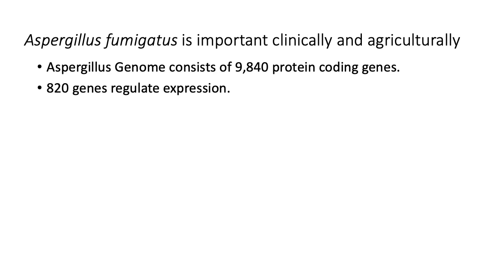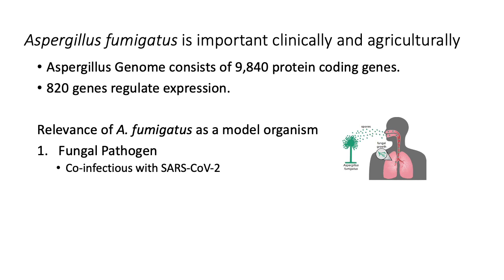Our work focuses on leveraging GRN inference to study the fungus Aspergillus fumigatus. Aspergillus fumigatus is a complex fungi with many protein-coding genes. Of these genes, 820 are associated with gene regulatory mechanisms. The combinatorial complexity posed by the large number of regulators makes GRN inference a challenging problem. The inference of a GRN for A. fumigatus is important because of the clinical and agricultural impacts of the fungus. Aspergillus fumigatus is a pathogenic fungus and results in a lung disease called Aspergillosis, which is hard to treat because it does not respond to many currently available antifungal medications. Moreover, recent work has shown that co-infection with the SARS-CoV-2 virus can result in complex disease states and have a mortality rate of 68%.